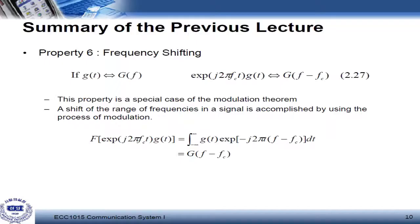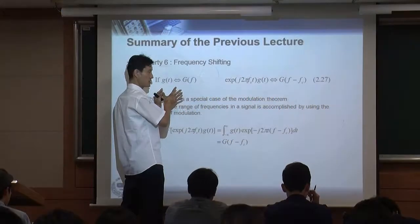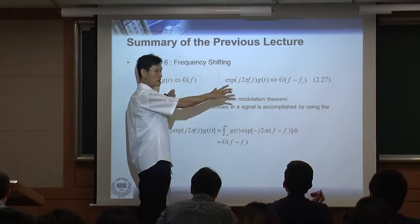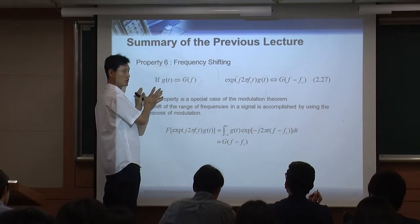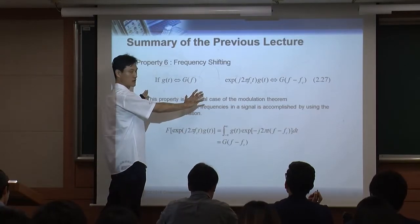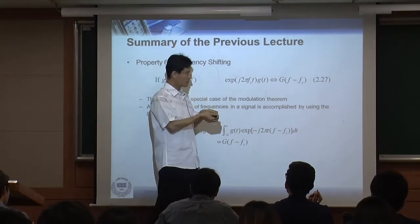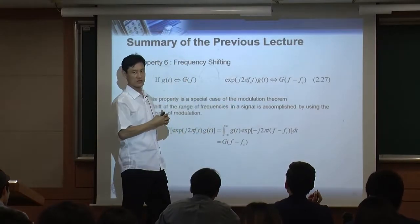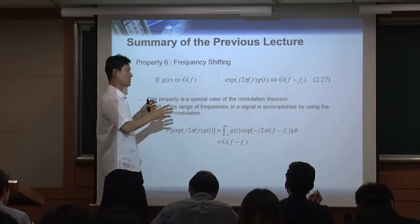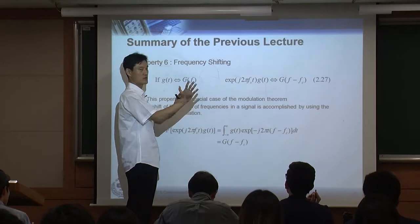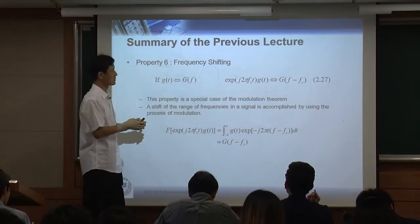Property 6 is frequency shifting. Before that, we had time shifting. If you shift a signal in time, what happens in frequency? If you have a time-domain signal and apply a delay or time shift, the amplitude or magnitude in the frequency domain does not change. What changes is the phase — the phase rotates in frequency.